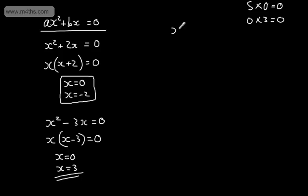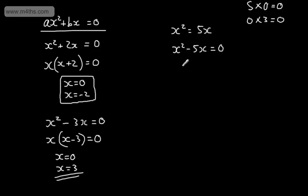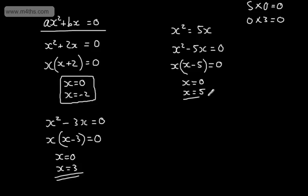If we had x squared is equal to 5x, the temptation is to divide both sides by x, but if we do that we lose a solution. Instead, we subtract 5x from both sides to get x squared minus 5x is equal to zero. Taking out the x gives x multiplied by x minus 5 is equal to zero. So x is equal to zero, or x minus 5 is equal to zero, giving us x equals positive 5. We've found our two solutions.